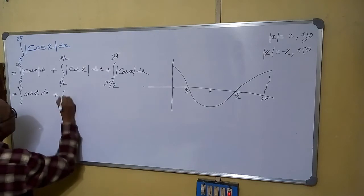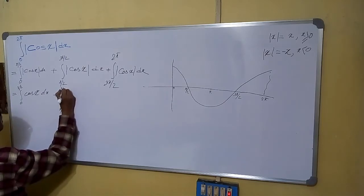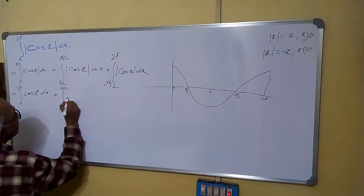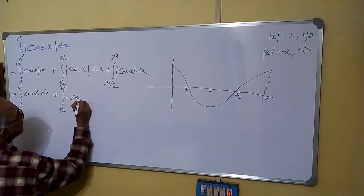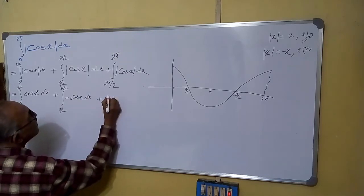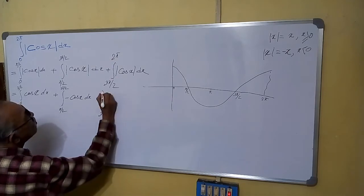Plus, this side is pi by 2 to 3 pi by 2. It is negative. So, we will write minus cos x dx, plus 3 pi by 2 to 2 pi.